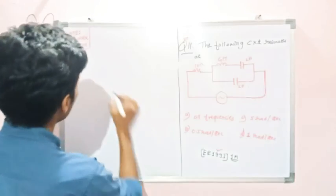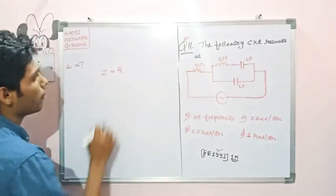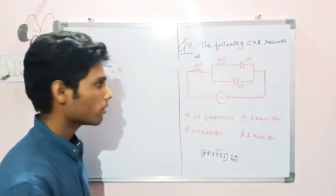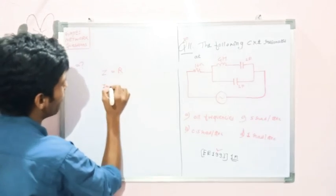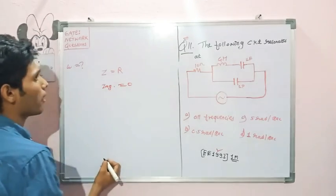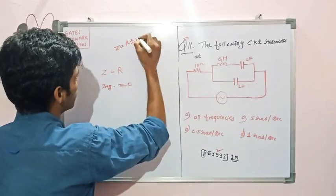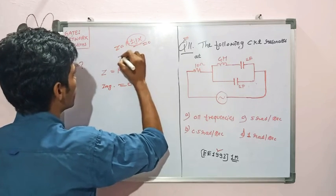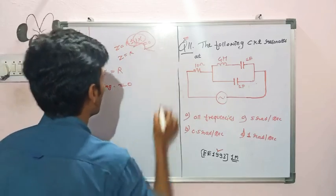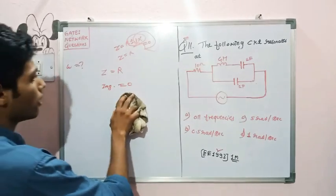Under resonant condition, Z is equal to R — that is, the equivalent impedance of the circuit equals the resistance itself. This means the imaginary part is equal to zero. We always write Z = R ± jX, and the imaginary part X must equal zero for Z to equal R. So we need to calculate the imaginary part of impedance Z and equate it to zero.